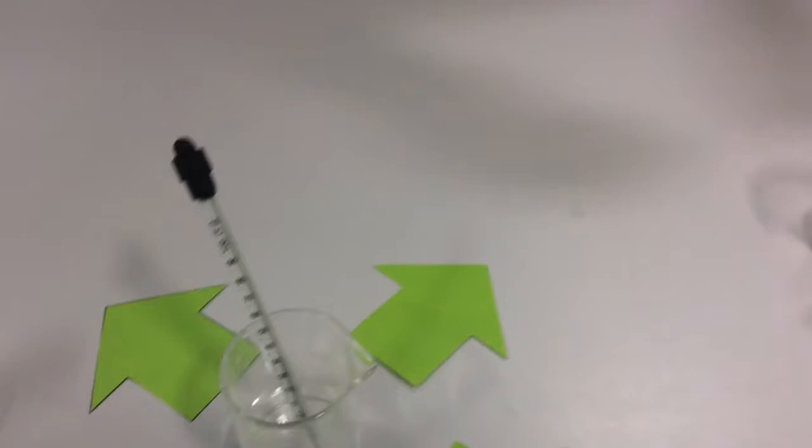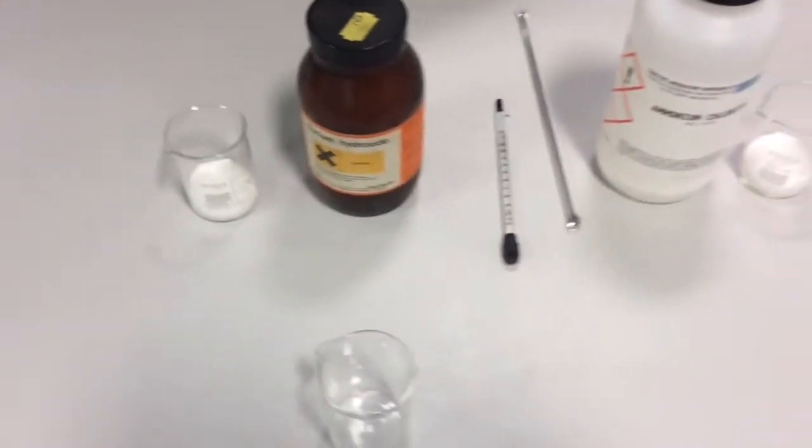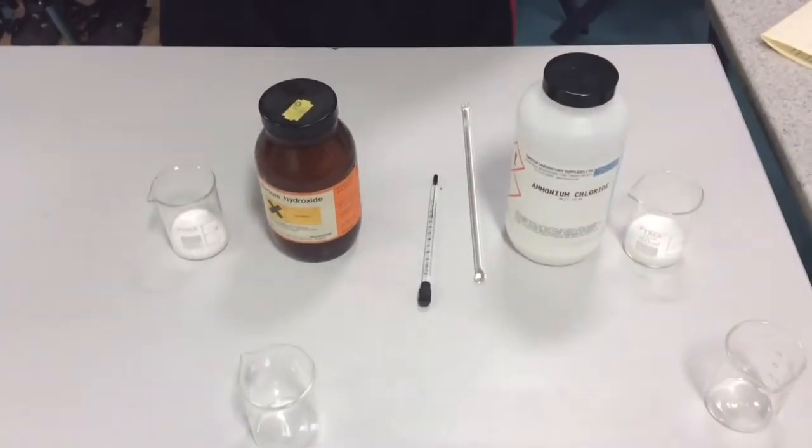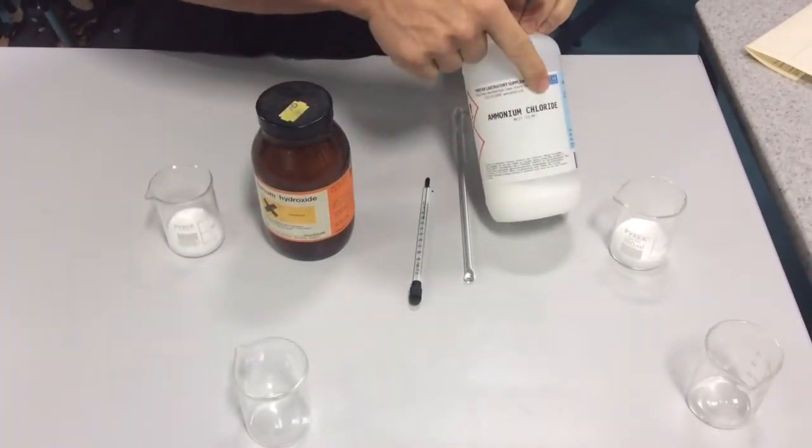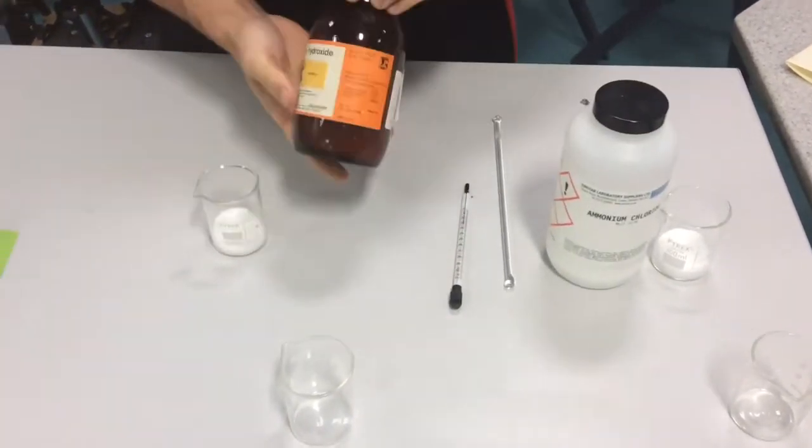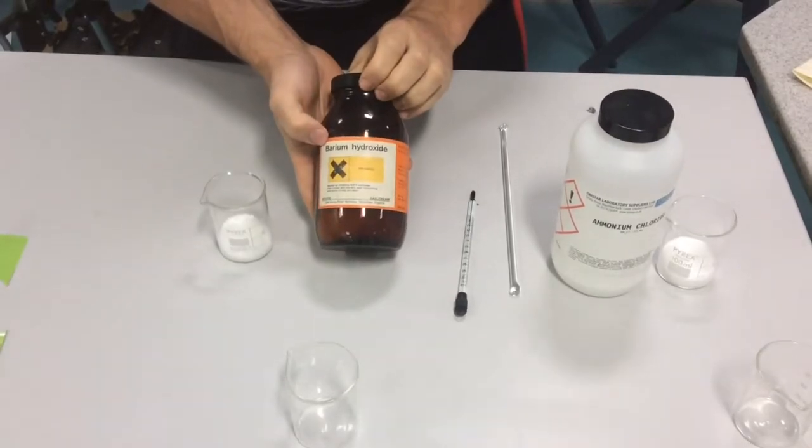Now we're going to look at an endothermic reaction. You're actually going to design an experiment for these two types of chemicals. Here we've got a bit of ammonium chloride, and here we've got a little bit of barium hydroxide.